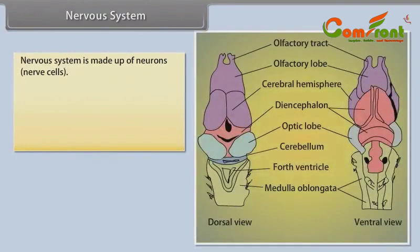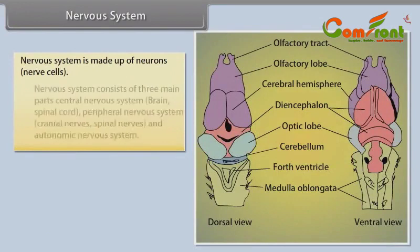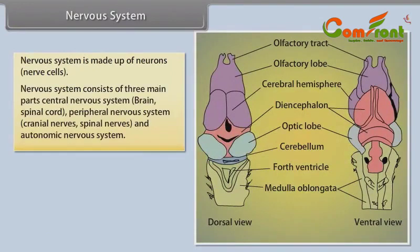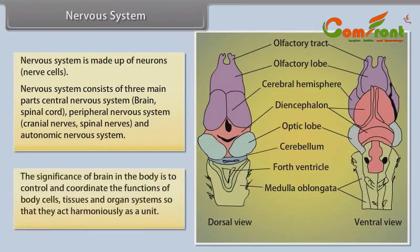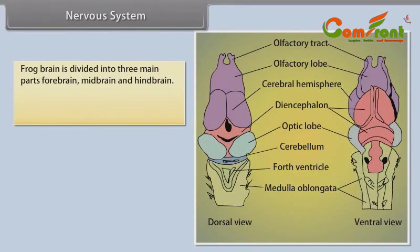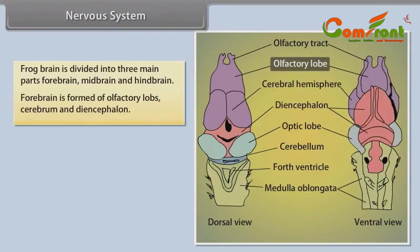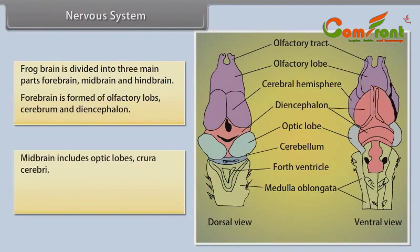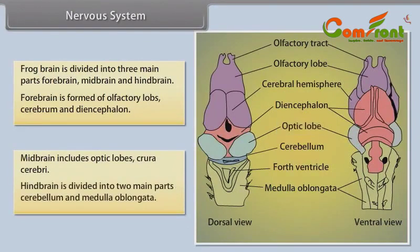Nervous System: The nervous system is made up of neurons (nerve cells) and consists of three main parts: central nervous system (brain and spinal cord), peripheral nervous system (cranial and spinal nerves), and autonomic nervous system. The brain controls and coordinates the functions of body cells, tissues and organ systems. The frog brain is divided into three main parts: forebrain, midbrain and hindbrain. The forebrain is formed of olfactory lobes, cerebrum and diencephalon. The midbrain includes optic lobes and crura cerebrae. The hindbrain is divided into cerebellum and medulla oblongata.